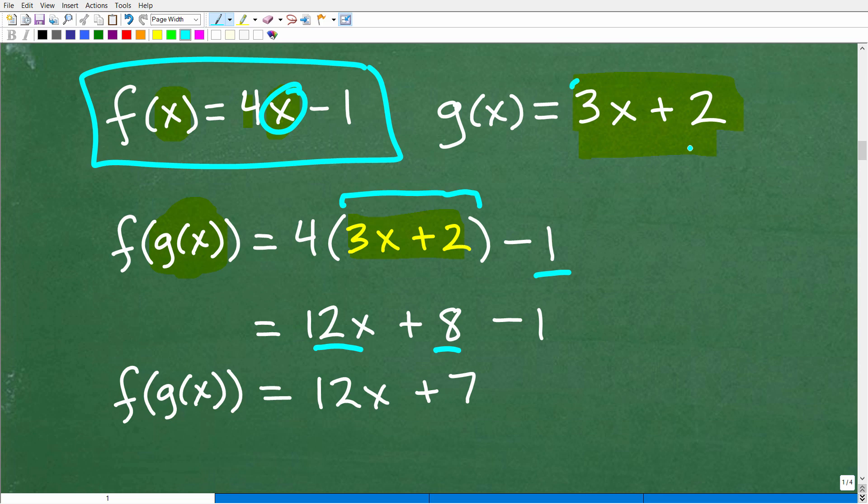So, here we don't have parentheses, but you want to use parentheses when you plug it in. Okay, so we have 4 times 3x, 12x, 4 times 2, 8 minus 1. And when we clean this up, we get f(g(x)) is equal to 12x plus 7.